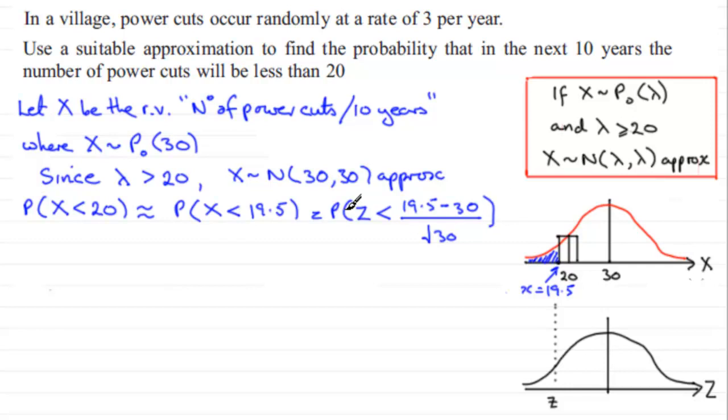Now if we work this out, we establish that the z value that we've got to be less than is minus 1.9170. So expecting a negative number because it is to the left of the mean here, which is 0.